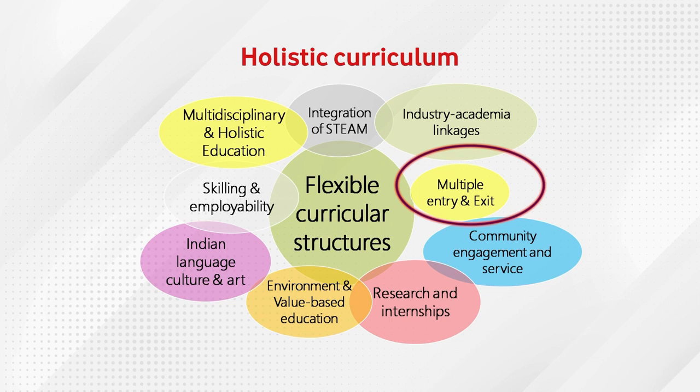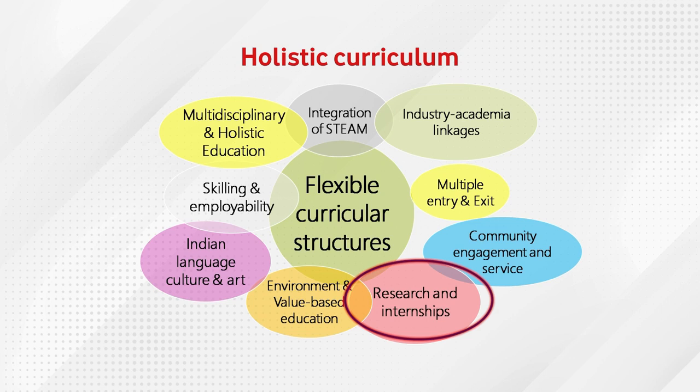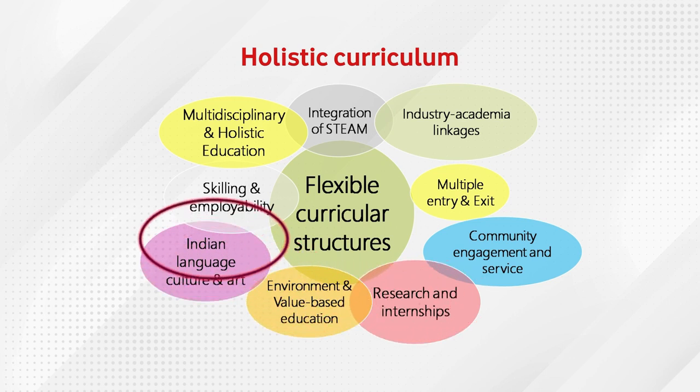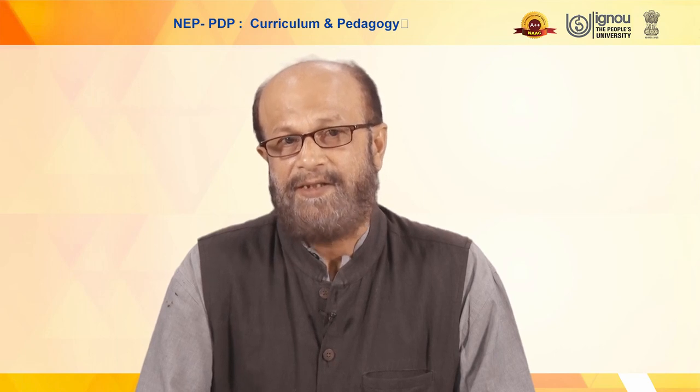Under the multiple entry and exit framework: after one year, a certificate at 40 credits; two years, a diploma; three years, an undergraduate degree; and four years, an undergraduate degree with honors, which can lead to a two-year or one-year master's and then a PhD. Community engagement and service form a compulsory part of the curriculum, with research and internship accounting for approximately 40 credits in the four-year undergraduate program. Environment and value-based education, Indian language, culture and art, skilling and employability, and multidisciplinary and holistic education are all included — students will be allowed to take courses from other disciplines of their choice, and those credits will count toward their degree.